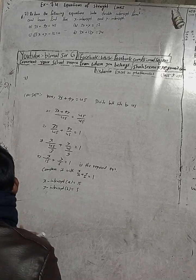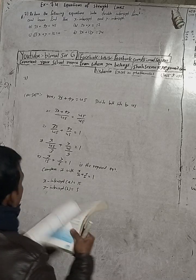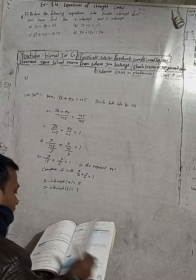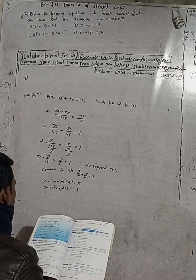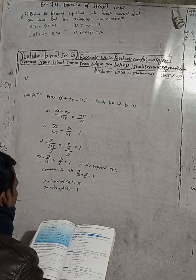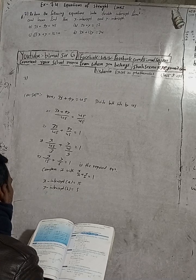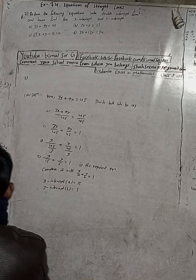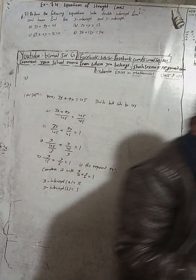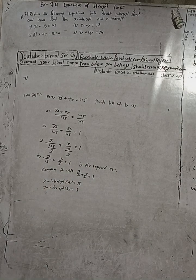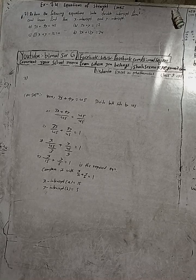Let me check the book answer. Part 7(a): x by 15 plus y by 5 is equal to 1. The book has not specifically asked to find the x-intercept and y-intercept separately, but our answer is correct within the framework.